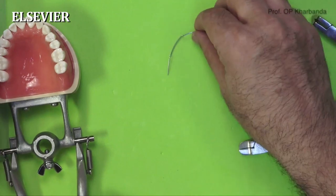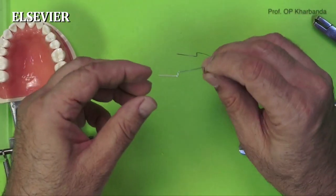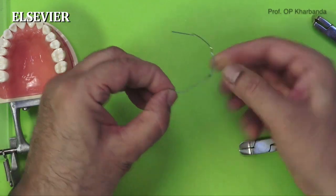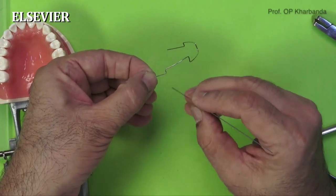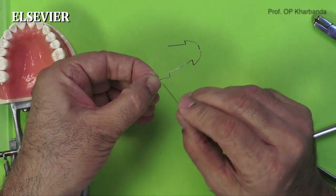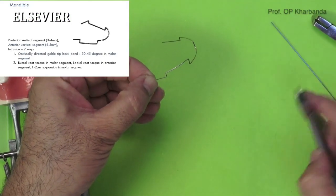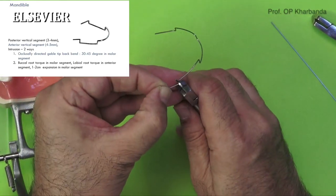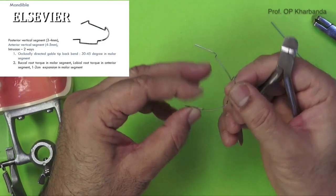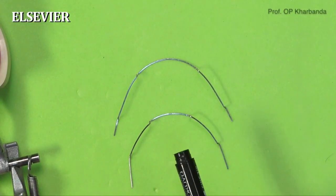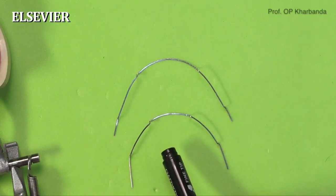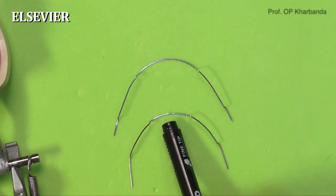In the lower arch, we have the same components; however, the dimensions are smaller by one millimeter or more. In the molar segment you need to provide a torque and toe-in. As you can see here, the toe-in is already present on one side, and now I will add toe-in on the other side. You also need to provide a buccal root torque. Coordination is important at any stage of wire bending, whether initial wires or final wires, and the same is true for the utility arch as well.